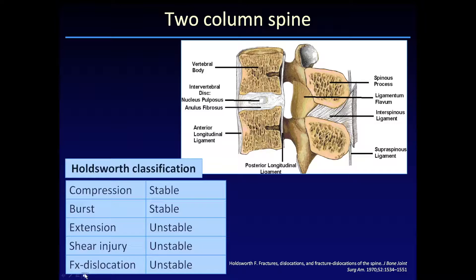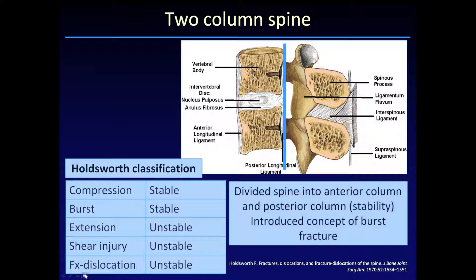Historically, it's worthwhile to realize that there have been a number of classification systems applied to this region, starting with Holdsworth, who developed his classification system in the 60s and was quite popular during the 70s, where the spine was divided into two columns — an anterior column and a posterior column. Holdsworth is really the first person to try to classify injuries into various types, and he classified them into compression, burst, extension, shear, and fracture dislocation. You'll see that the current classification systems are quite similar in terms of how they break down injuries in this region.